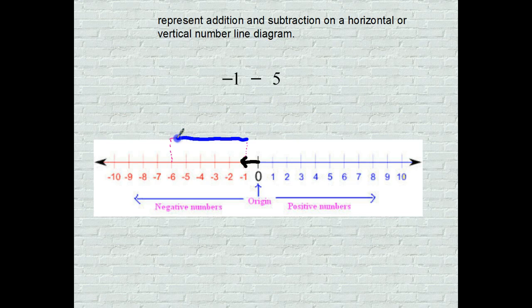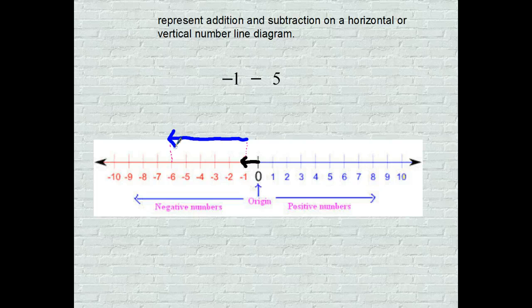Draw your arrow, and where do you end up? Negative 1 take away another 5, you end up at negative 6.